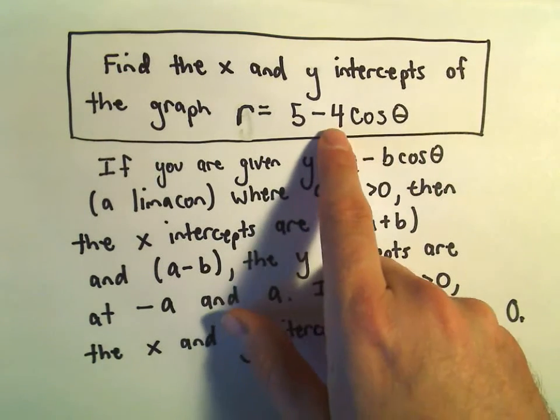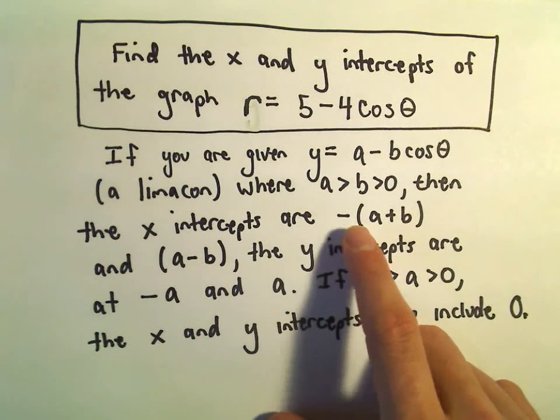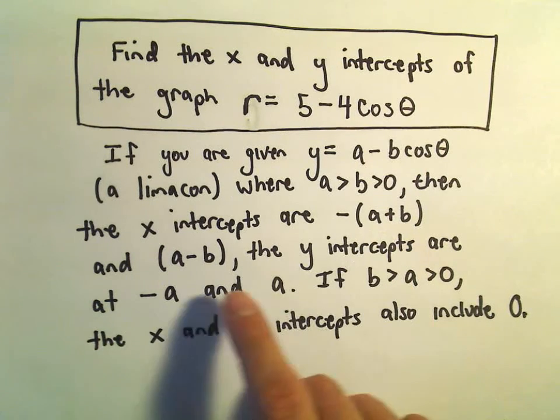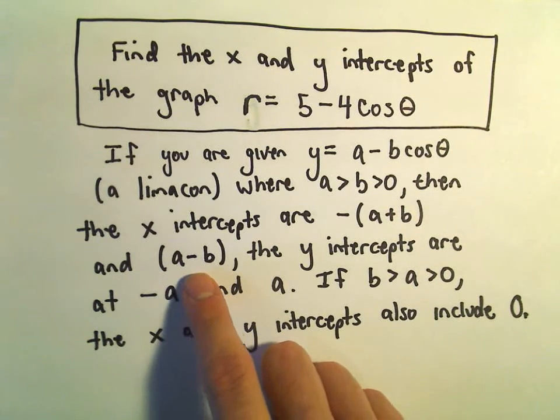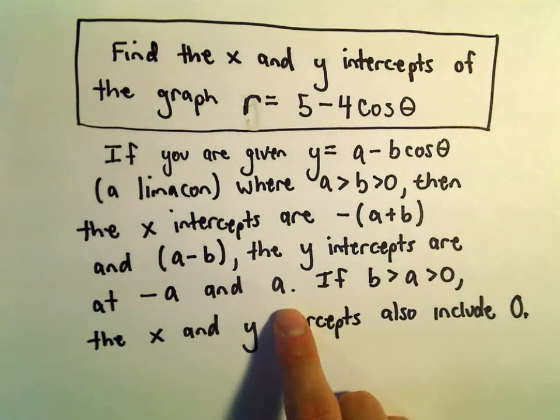Okay, so a is 5, b is 4. To get the x-intercepts, we simply add a plus b and take the negative of it. That'll be one of our x-intercepts. Then we take a minus b, that'll be our other x-intercept. The y-intercepts are just negative a and positive a.